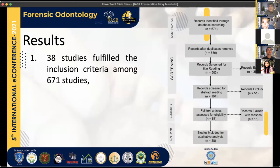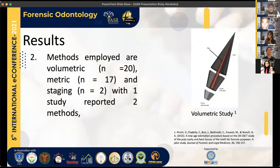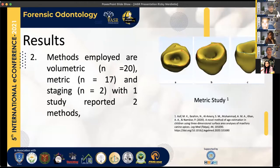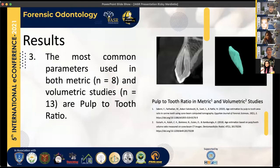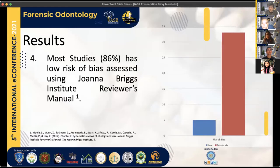From 671 studies identified, 38 fulfilled the inclusion criteria. Most studies used volumetric methods — 20 studies used volumetric assessment — while 17 used metric studies, which involve measuring around the tooth. Staging was also represented, with one study reporting two methods, giving 39 methods total across 38 studies. The most common method in both volumetric and metric categories is the pulp-to-tooth ratio, where the whole tooth volume is divided by the pulp volume and the correlation coefficient is calculated.